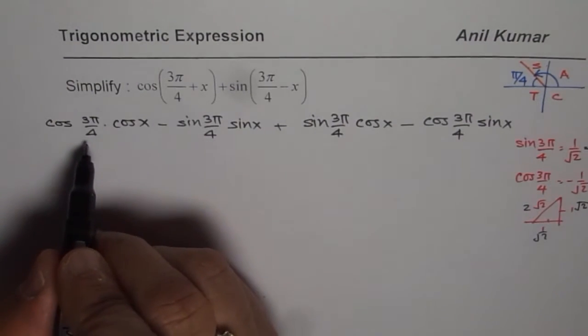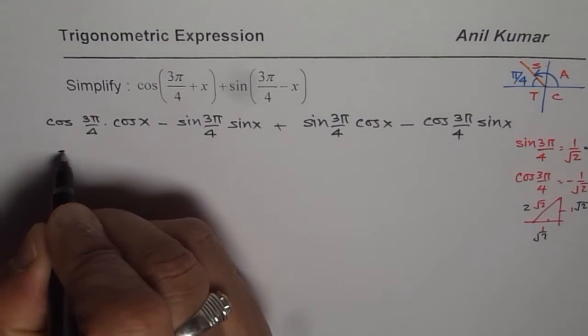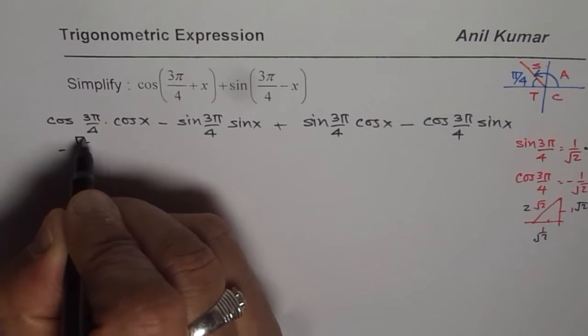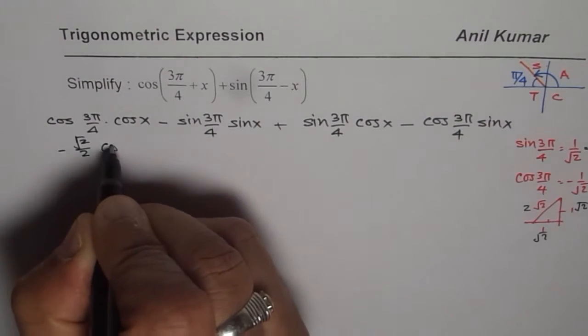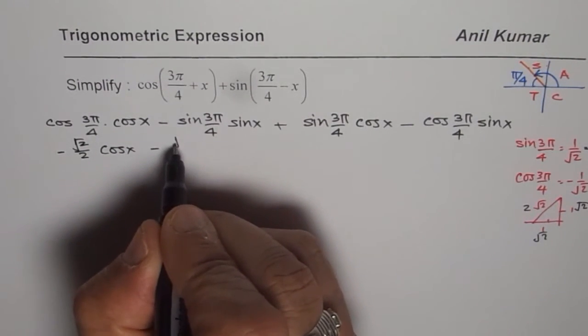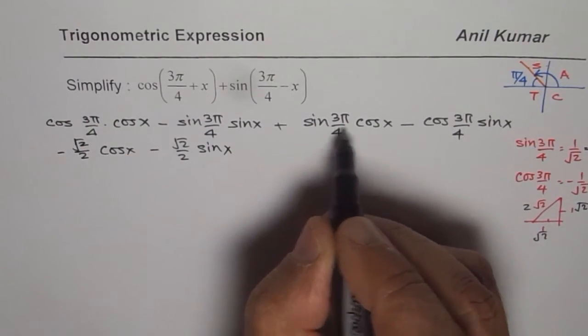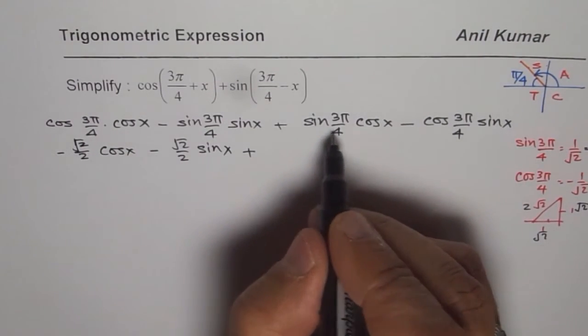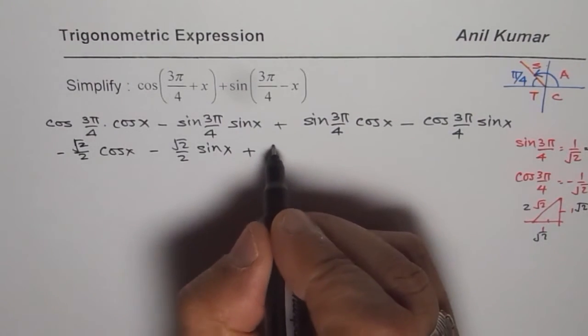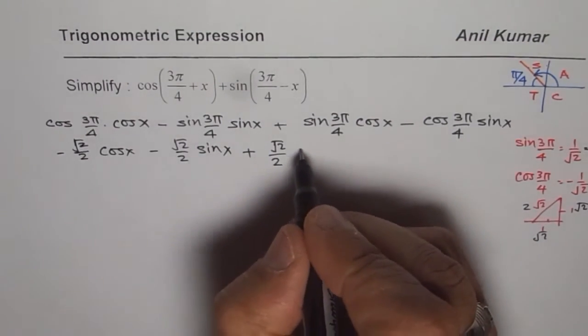So let us replace cos(3π/4) with the negative value. We get here -√2/2 of cos(x). In this case, sine is positive, so we get √2/2 of sin(x). In this case, we get plus sin(3π/4) is √2/2. Sine is positive in this quadrant, cos(x).